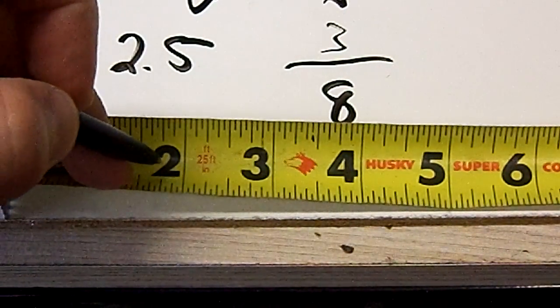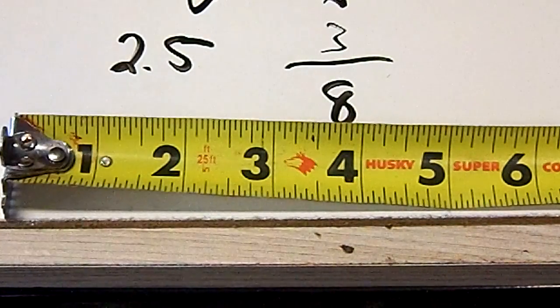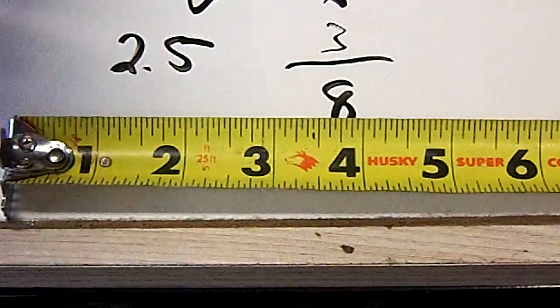Now when you look back at the rest of your ruler or your tape measure, that's going to be two and seven-eighths. That's going to be the center mark.